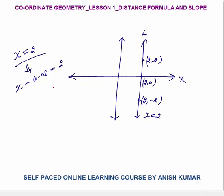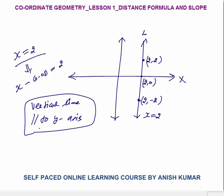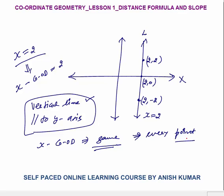In general, on any vertical line parallel to the y-axis, the x-coordinate always remains the same at every point. The y-coordinate changes from point to point, but the x-coordinate is always the same. This is a very important concept for further understanding of coordinate geometry.